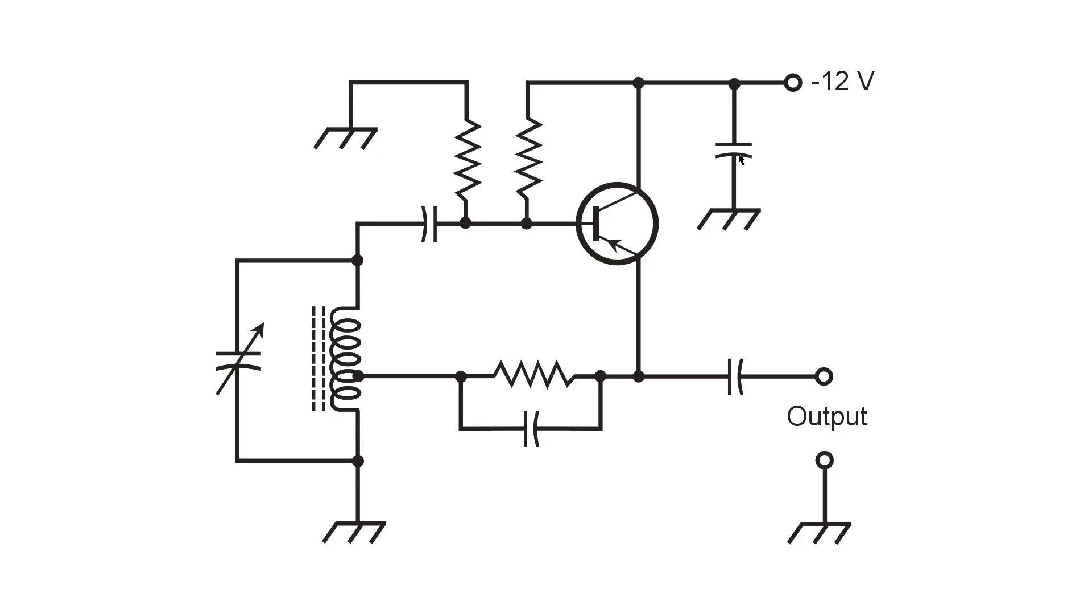This capacitor here is a bypass capacitor that places the collector at signal ground while allowing a negative voltage to exist there for direct current. So it doesn't let direct current through, but it lets the signal through.